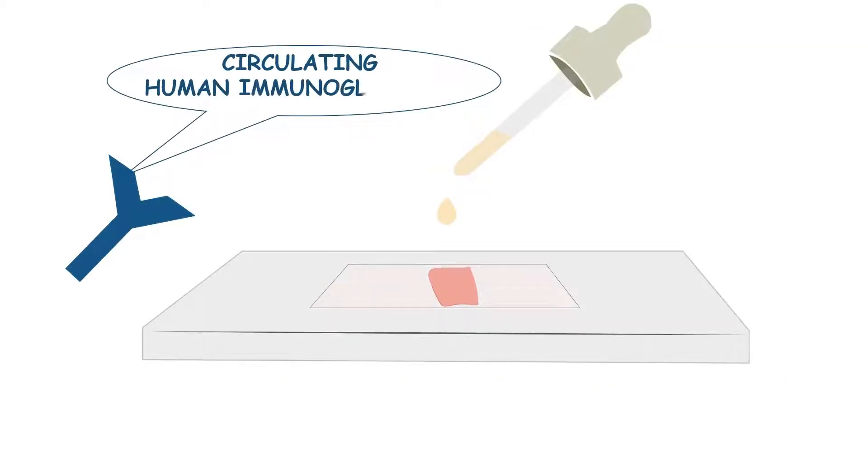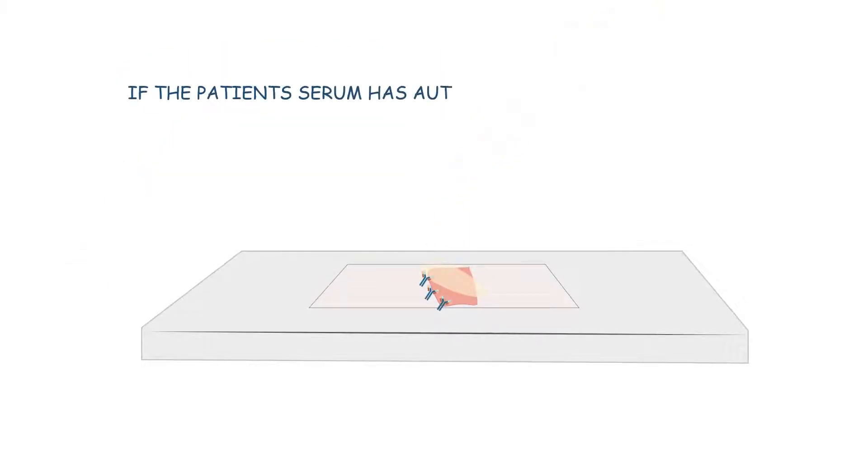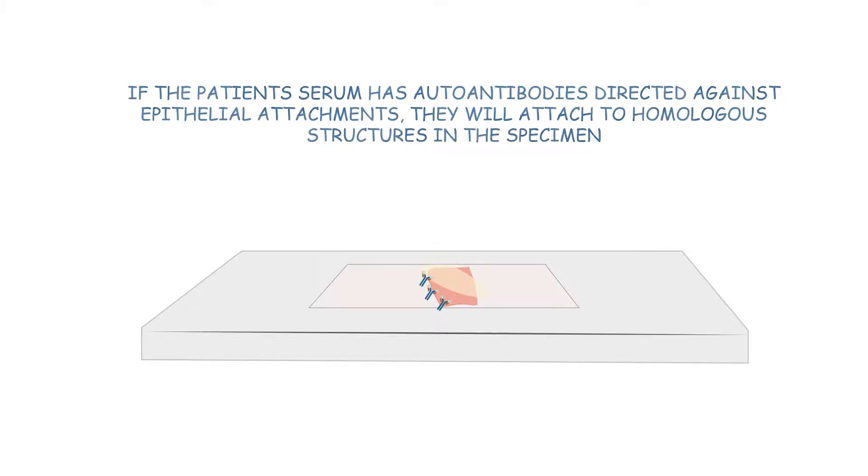As a next step the patient's serum which might have circulating autoantibodies is used. If the patient's serum has autoantibodies directed against epithelial attachments they will attach to homologous structures in the specimen.